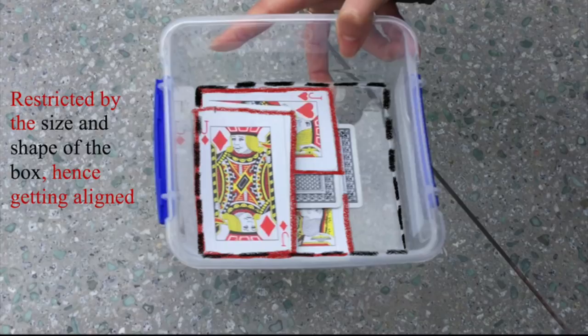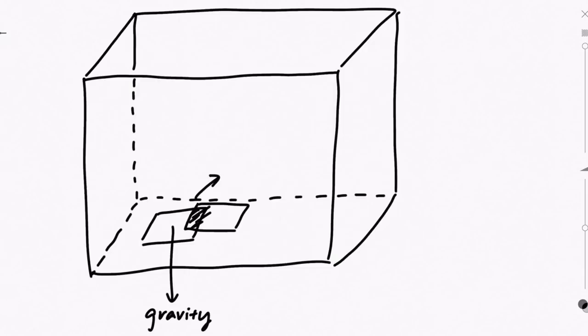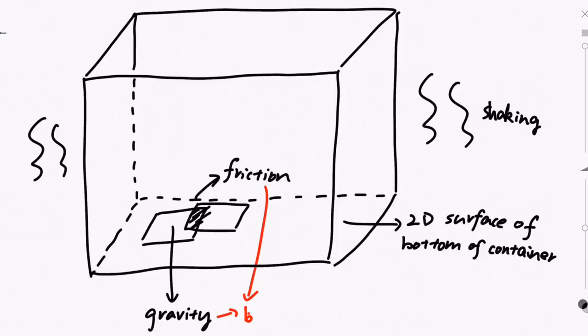The structured particles were the poker cards. The binding forces were the gravity and the friction between the cards, which also existed between the cards and the container. The environment was the 2D surface of the bottom of the container, which was restricted by the size.